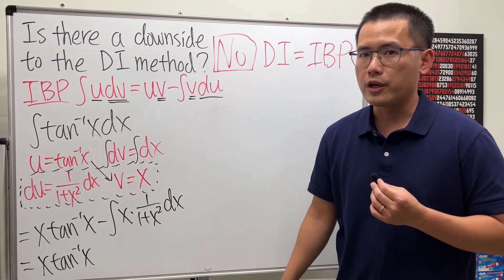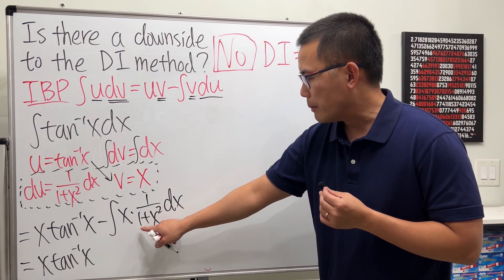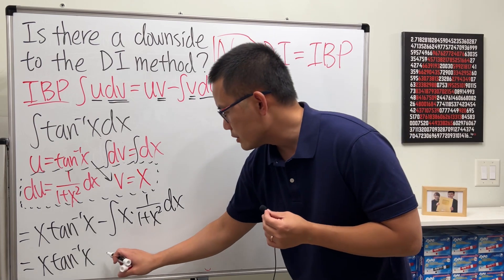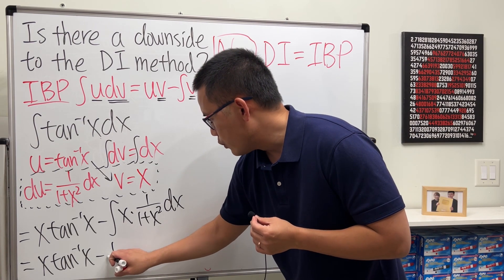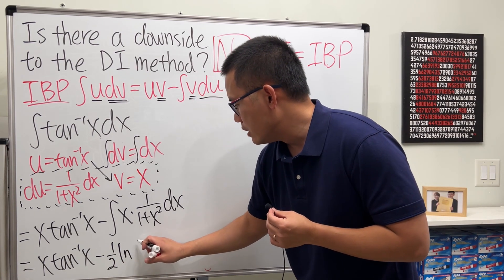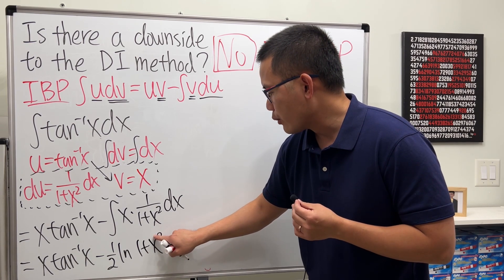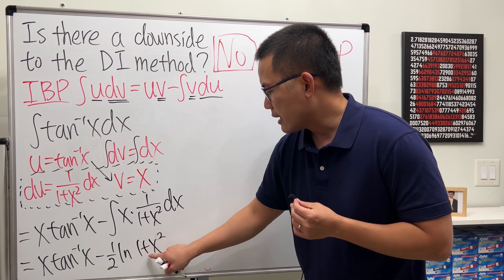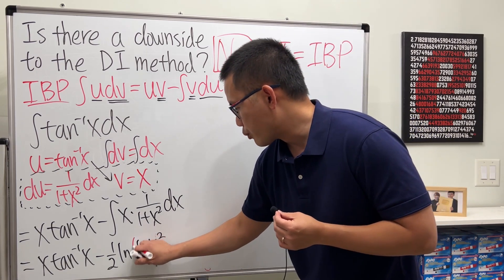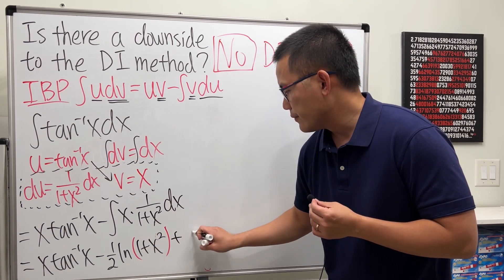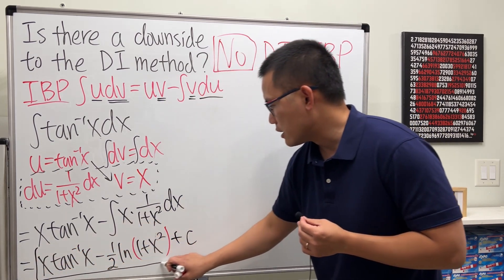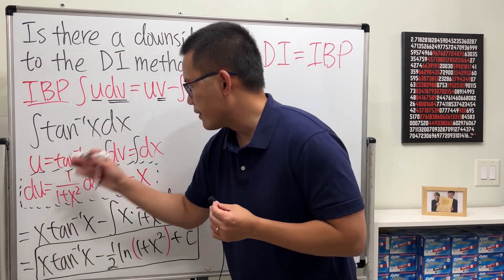X over 1 plus X squared. You put U to be 1 plus X squared. Work that out. You will get negative 1 half LN of 1 plus X squared. And you don't need absolute value because 1 plus X squared is always positive. So, parentheses will do it. So, this right here is the answer for that integral.